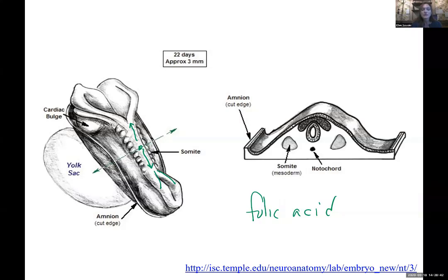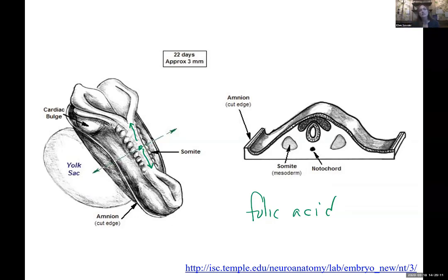Spina bifida is when the neural tube does not close - if the nerve tube doesn't close, there's nothing for the bones to grow around. When the baby is finally formed, it won't have closed that portion of the vertebral column, so the dura mater will actually bulge out on the back of this person, and the cauda equina can stick out within that bubble. If severe enough, the nerves aren't extending down to the legs and the person can be paralyzed. So folic acid is incredibly important. This closure is happening on day 22.